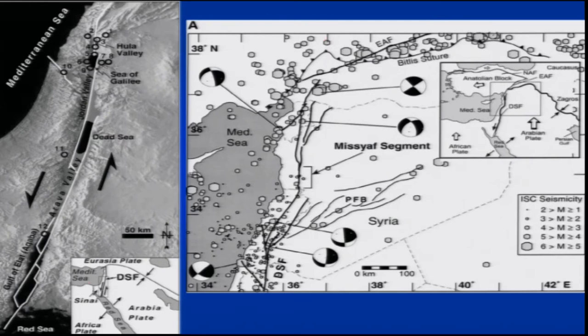This is the Red Sea region. We have the Arabian plate moving in this direction and the African plate moving in the southwest direction. We are having this zone which is the Dead Sea fault zone, which has an almost left-lateral movement here. These types of zones are seen on the earth's surface and are developed because of differential plate motions.